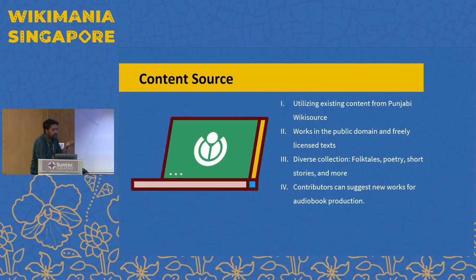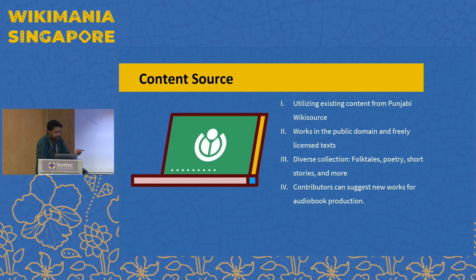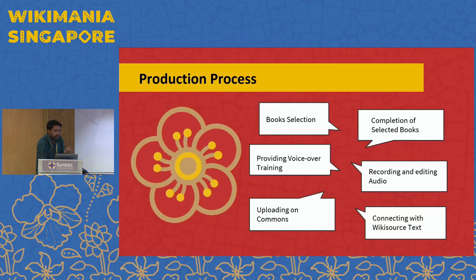The next point is content source. We take content from Wikisource books that are already there, so we don't have to worry about license issues. The literature already available in Wikisource gets another form — the audio form. We also ask the community what book they think we should create as an audiobook, so people can suggest what books are trending or important for the community.